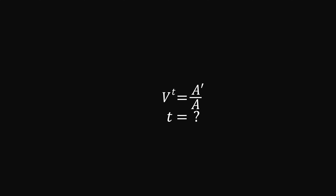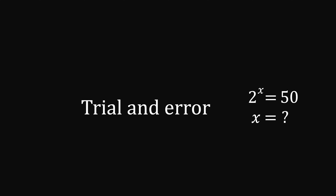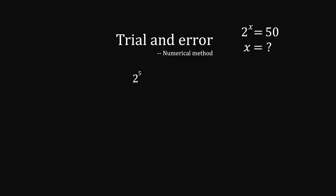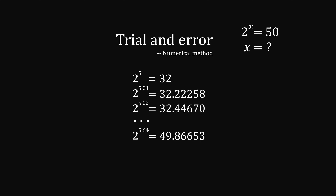To solve this, let's consider a special case: 2 to the power of what gives you 50? A straightforward method is the trial-and-error method, called the numerical method, because there is no general rule for solving. You start with a guess — say x equals 5. That gives 32, which is not the answer. So we keep going, taking small steps. We try a power of 5.01, getting a slightly greater number. Continuing until we reach 5.64, which gets us close to 50. So the answer is roughly 5.64.